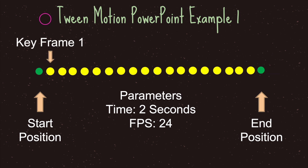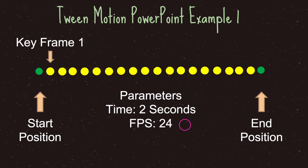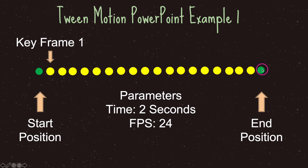Let's look at what the computer does behind the scenes with tween motion animation. It takes in the start position and end position along with the parameter set and creates the key frames. We tell the computer the starting position, the end position, two seconds total, and twenty-four frames per second. The computer creates these key frames — from the starting position it moves the game object just a little in key frame one, then keeps going until it reaches the end position.